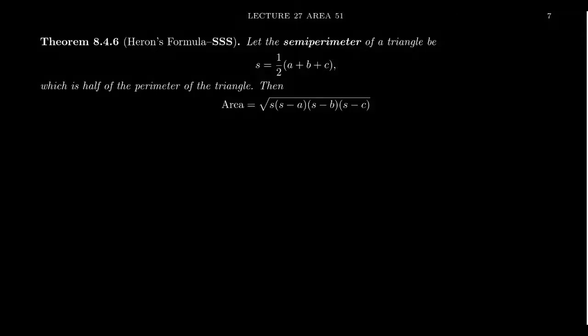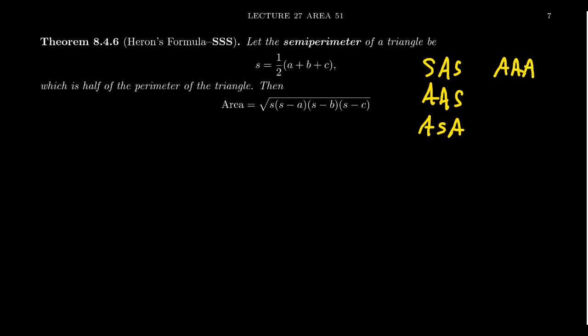In a previous video we talked about how we can compute the area of a triangle if we have a side-angle-side situation. We also talked about angle-angle-side and angle-side-angle. There are some other triangle conditions to consider. What about angle-angle-angle? Well, angle-angle-angle doesn't uniquely determine a triangle — it only determines a class of similar triangles that are proportional to each other, since the side lengths are not fixed.